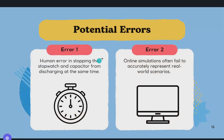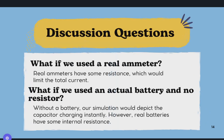Potential errors include human error in timing — stopping and starting the stopwatch at the same time as the capacitor charging and discharging could introduce error. Also, online simulations fail to accurately represent real-world scenarios. Real ammeters have some resistance, which would limit the total current, whereas the simulation uses zero resistance. Additionally, without a resistor, the simulation depicts a capacitor charging instantly, which isn't true because most batteries have some small internal resistance.